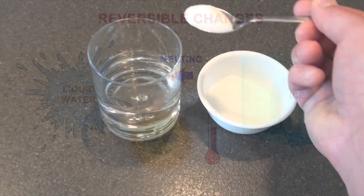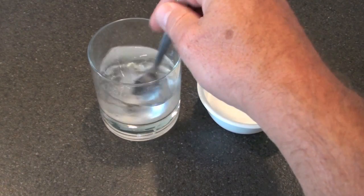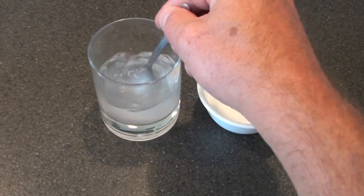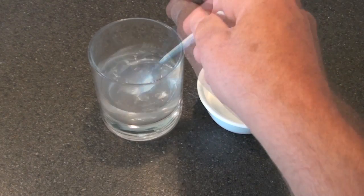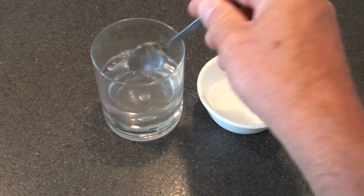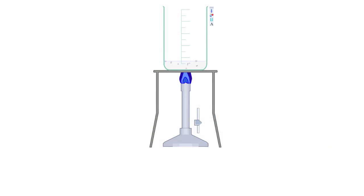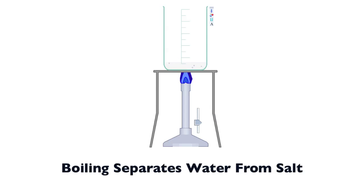If you mix salt with water, it will dissolve to form a salt solution. Dissolving is a reversible change because the water and salt can easily be separated by evaporating the water from the salt solution, leaving the crystalline salt behind. The evaporated water can be collected as well.